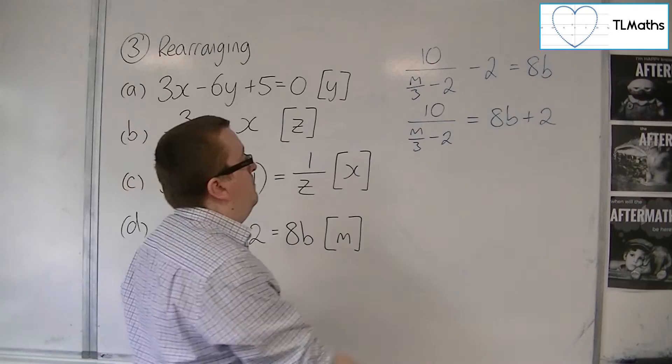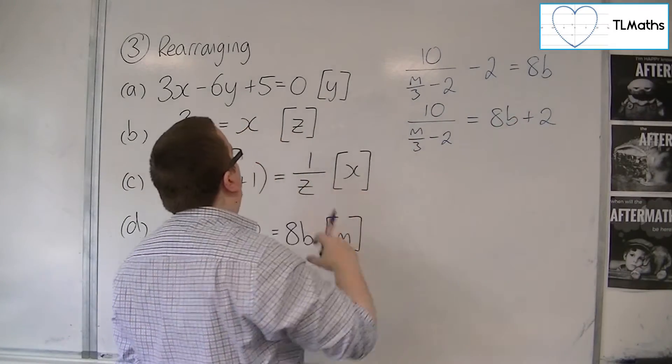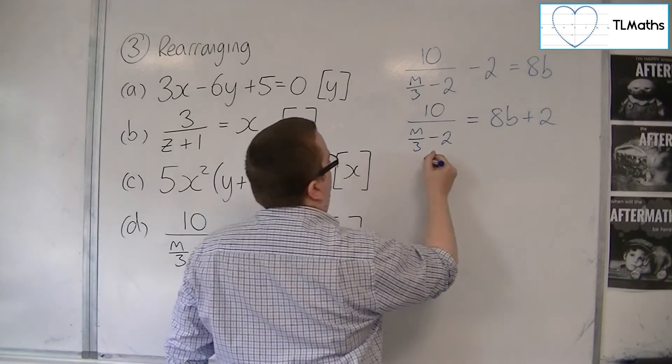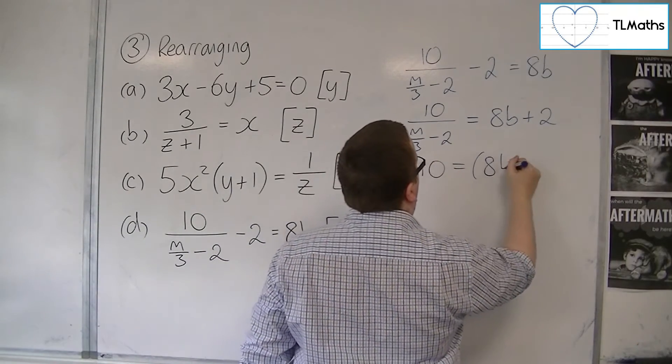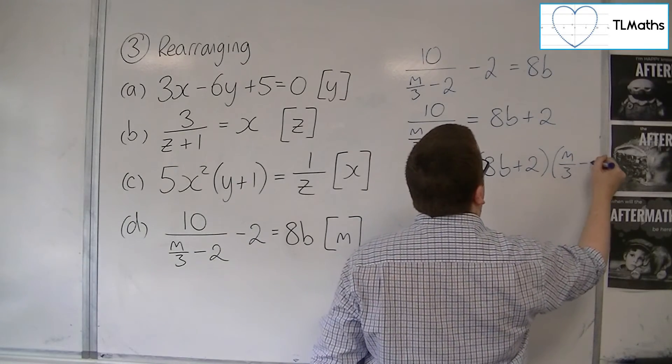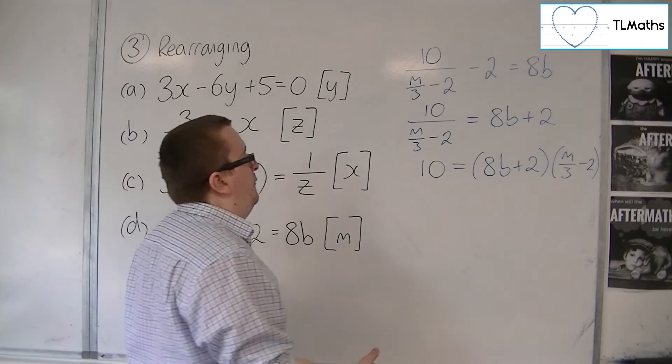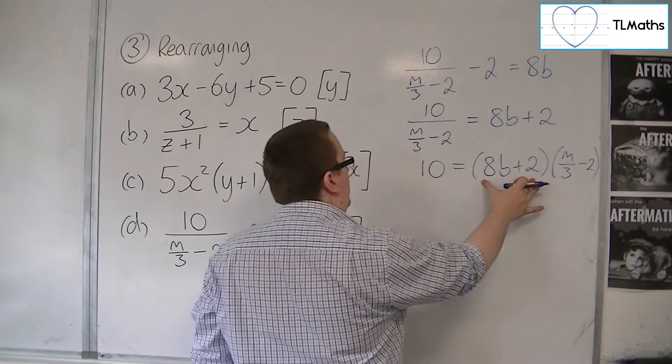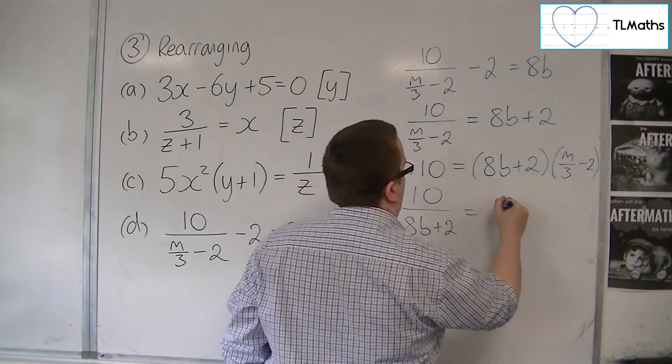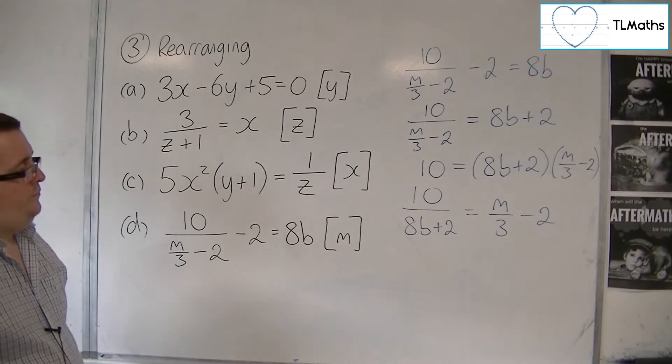I would then multiply both sides by the M over 3 take away 2. It's a very similar step as we did up here where I multiply both sides by Z plus 1. So I would get 10 is equal to 8B plus 2. Notice how I'm putting 8B plus 2 in a bracket because I've got to multiply the whole thing by that M over 3 take away 2. I can now divide both sides by the 8B plus 2. So 10 over 8B plus 2 is equal to M over 3 take away 2.